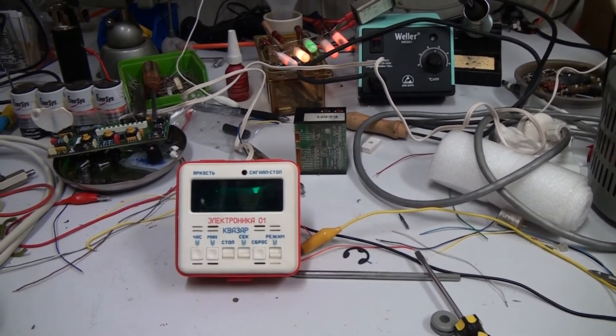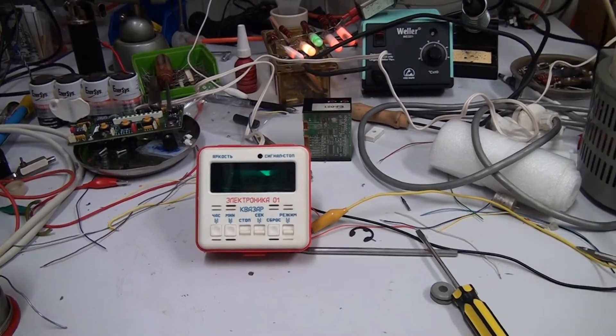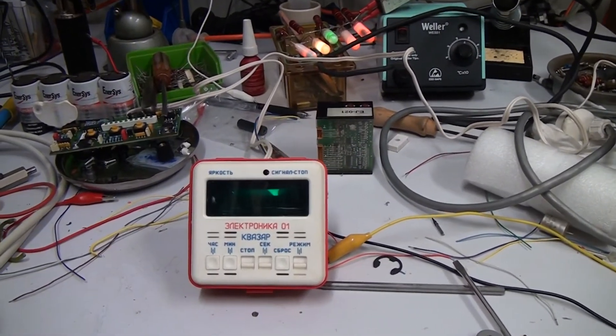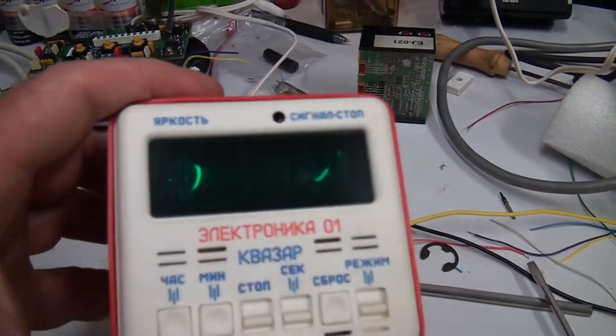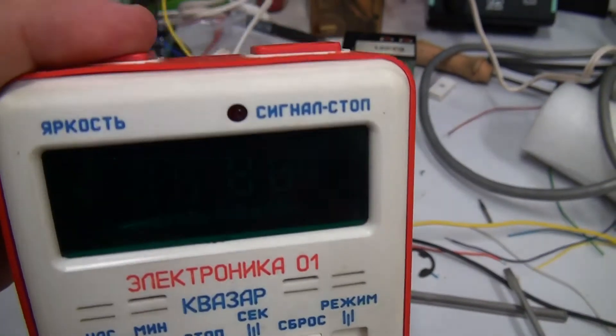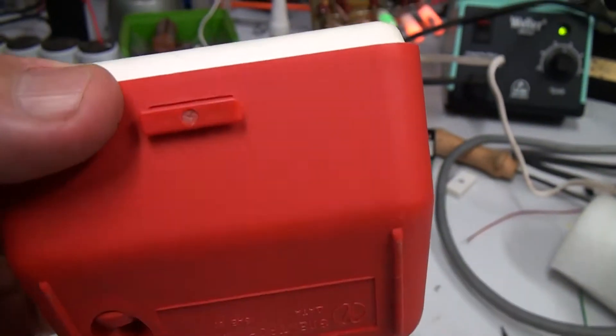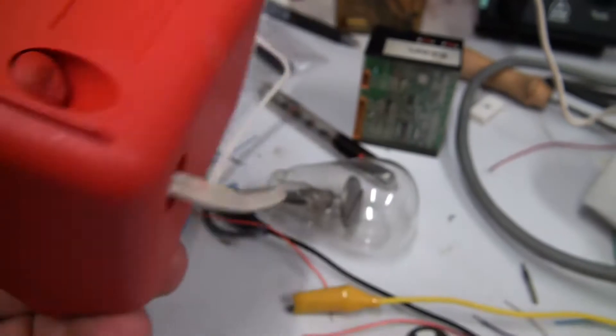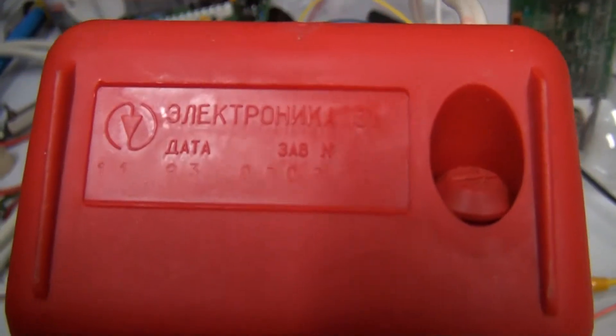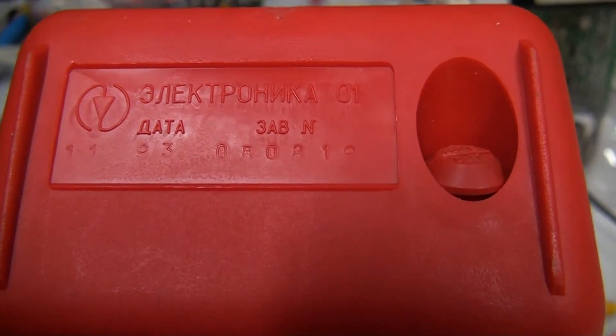G'day folks, I just scored another one of these little Russian clocks and this one is Electronica 01, manufacturer date of 1993.